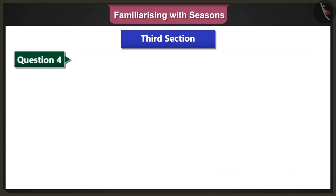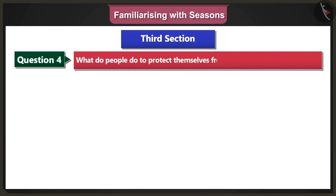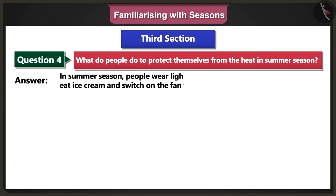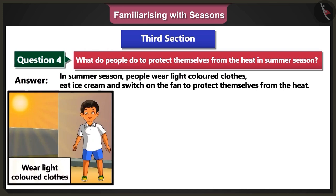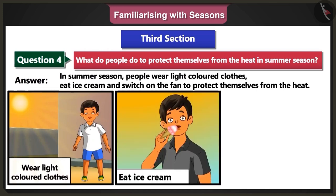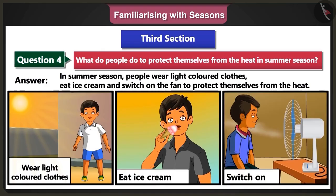Fourth question: What do people do to protect themselves from the heat in summer season? Answer: In summer season, people wear light-coloured clothes, eat ice cream, and switch on the fan to protect themselves from the heat.